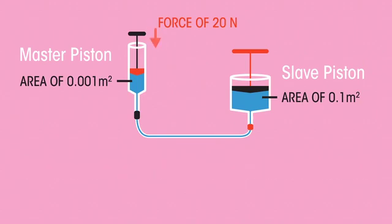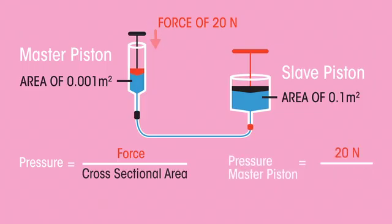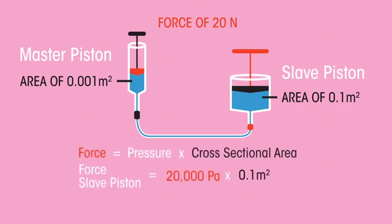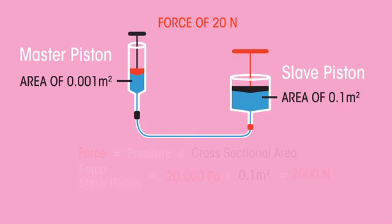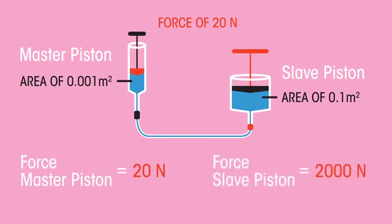First, we need to calculate the pressure produced by the master piston. So 20 newtons divided by 0.001 meter squared to give 20,000 pascals. Now we can calculate the force produced by the slave piston. So 20,000 times 0.1 meter squared gives 2,000 newtons. So the force on the master piston was 20 newtons, but the force applied to the slave piston was 2,000 newtons. The force has been multiplied. A small force on a small area has resulted in a much larger force on the slave piston.